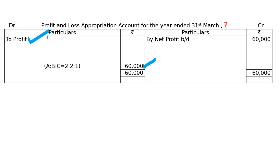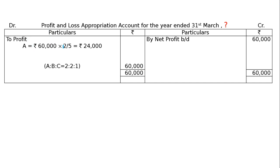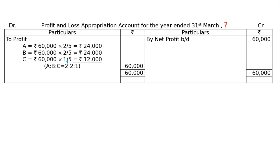A, B, C में 2:2:1 ratio में बाँट आओ. A का बनेगा 60,000 × 2/5 = 24,000. B का भी 60,000 × 2/5 = 24,000. C का बनेगा 60,000 × 1/5 = 12,000. तो 12,000, 24,000, 24,000. यह जो रहना guarantee से भी ज्यादा है — guarantee 10,000 का था, तो यह 12,000 मिल रहा है. नहीं — guarantee is not required.